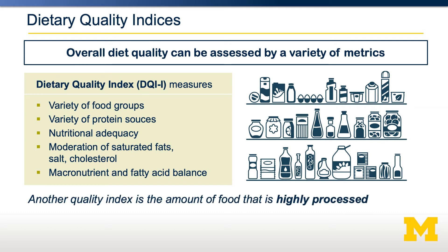Another index by which you could think about the quality of a diet is how much of that food is considered processed. We're going to talk more about what food processing does and how it can be measured.